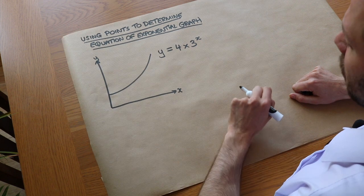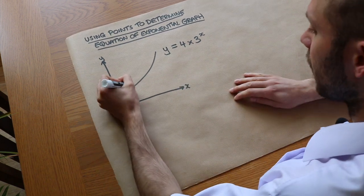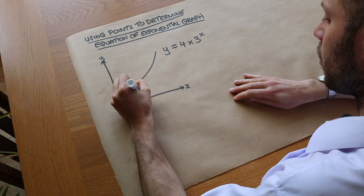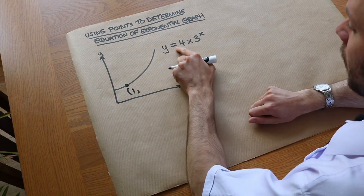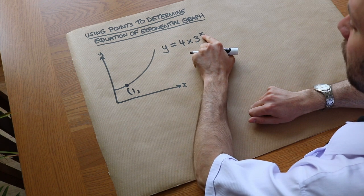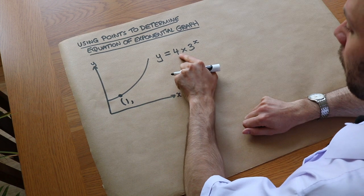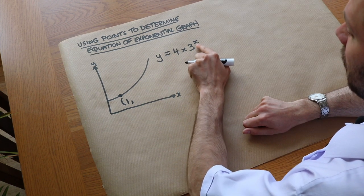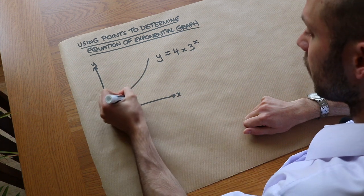We could use this to generate points. If x equals 1, the y value is 4 times 3 to the power of 1. 3 to the power of 1 is 3, and 4 times 3 is 12. So we get y equals 12.